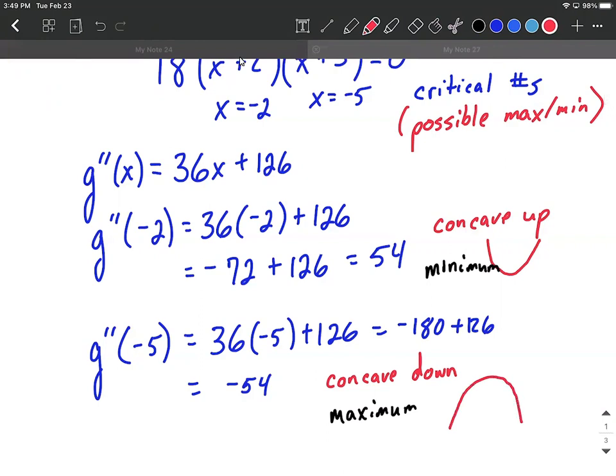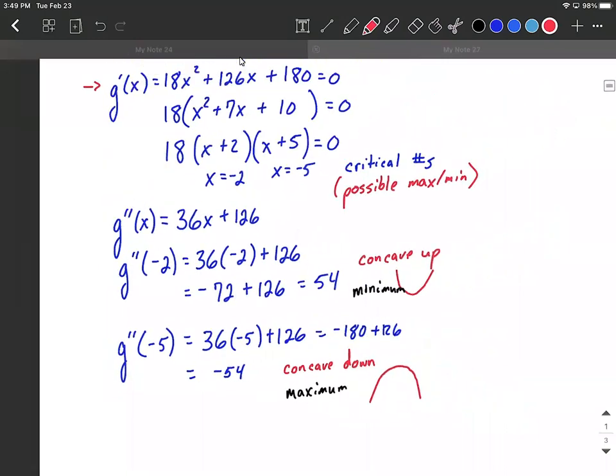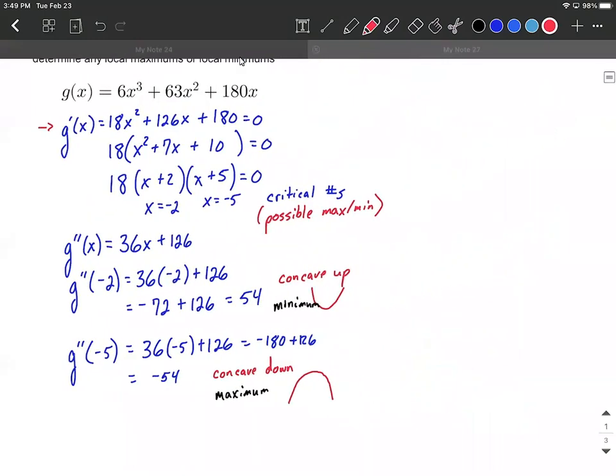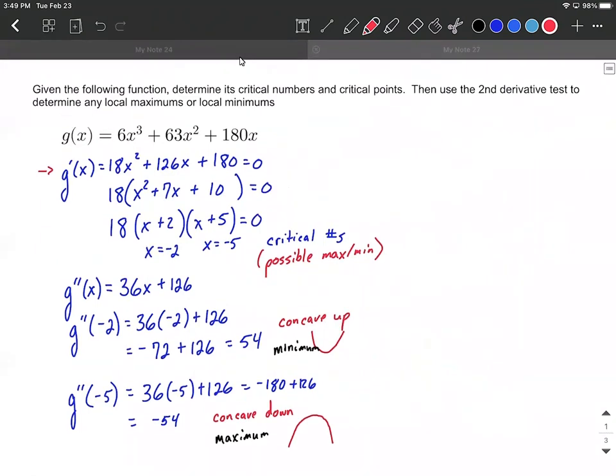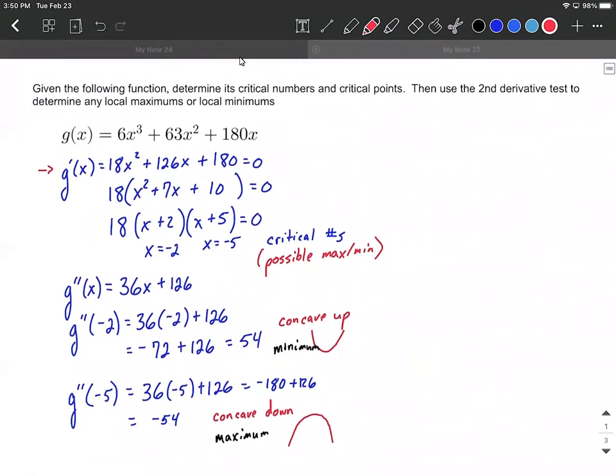The very last thing that we need to do is actually find where the maximum and the minimum occur. We know where they occur, those x values, but we need to know the actual maximum or minimum, which would be the y values. So to get those, what we're going to do and create these critical points is we go back to the original function, g of x. Before we took any derivatives, we're going to plug these in.